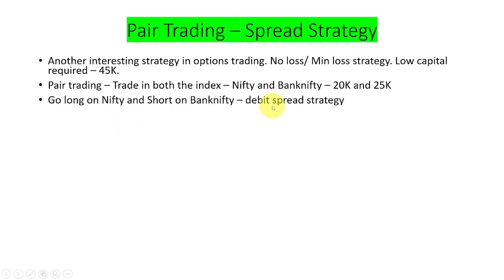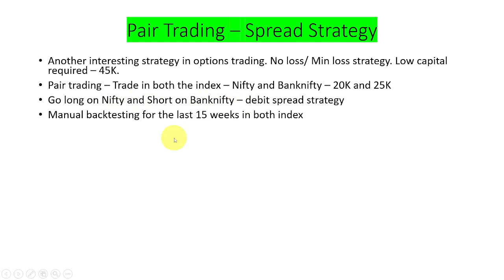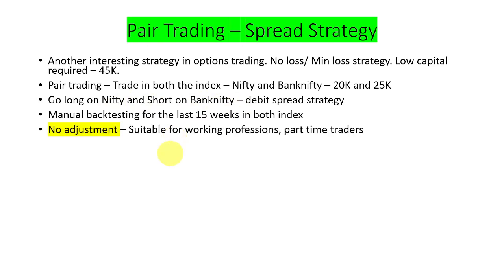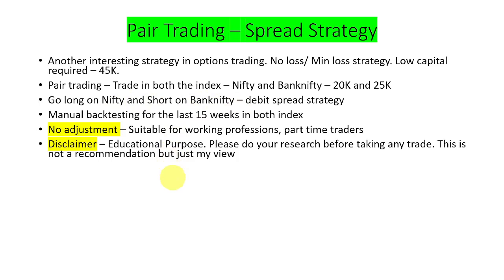We are bullish on Nifty and bearish on Bank Nifty, and we are going to use a debit spread strategy. Debit spread means we buy something near the market price — ATM or ITM — and sell OTM in both indexes. For Nifty we buy ATM and sell a little farther OTM, same with Bank Nifty. In this video I have given manual back testing for the last 15 weeks with no adjustments, making it suitable for working professionals and part-time traders.